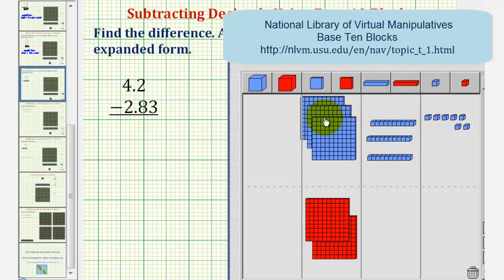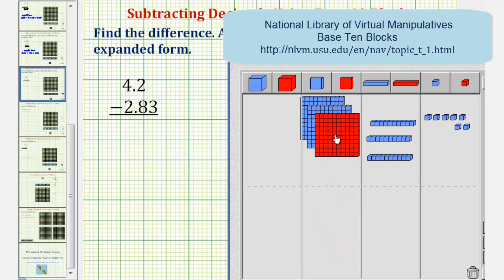Now looking at the flats of the ones place value, we have three flats. We want to remove two flats. So minus one, minus two flats, which leaves us with our difference. We have one flat, three longs, and seven bits.